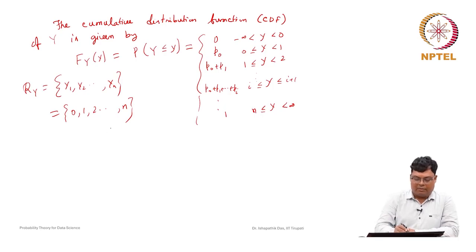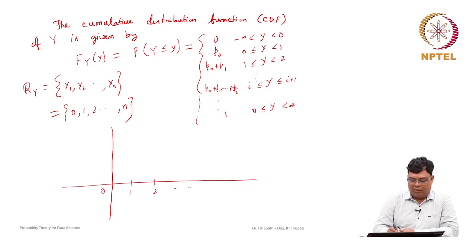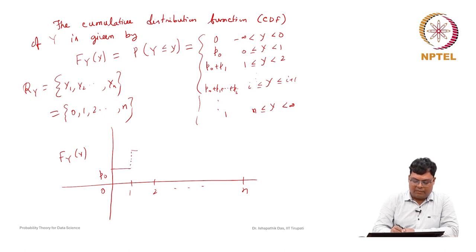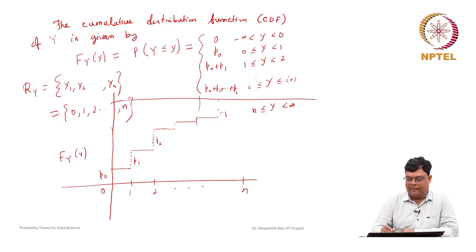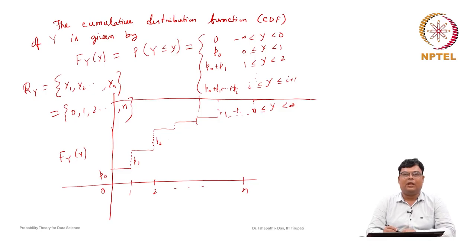The graph of the CDF of the binomial random variable is a staircase function: it starts at 0, jumps by P0 at y=0, by P1 at y=1, by P2 at y=2, and so on, until it reaches 1 at y=n.